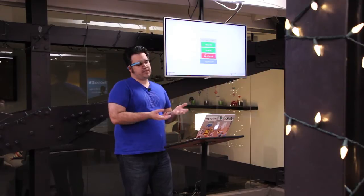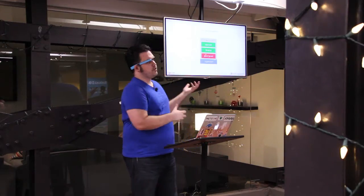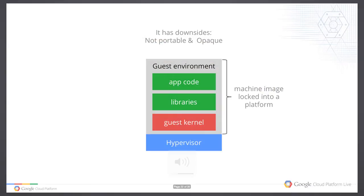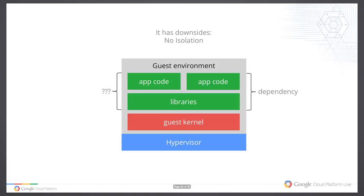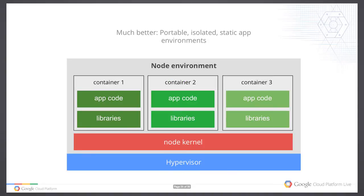With vanilla virtualization you have a guest environment, a hypervisor running low-level stuff, a guest kernel, and some libraries. The downsides are it's not portable and it's opaque — you're locked into that particular platform and machine image, which can be troublesome when you need to scale out. Running two apps in the same VM with conflicting library dependencies gives you no isolation. We need to snip at the kernel and operating system level to contain and extract, giving us a portable, isolated environment.